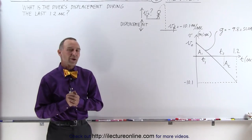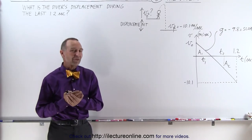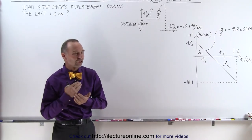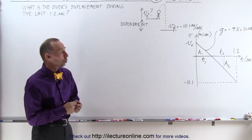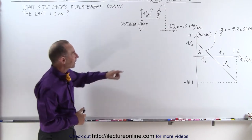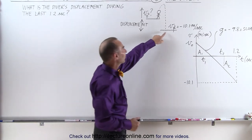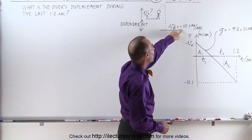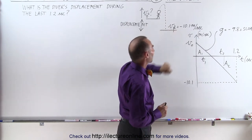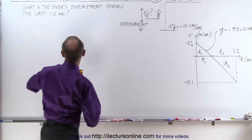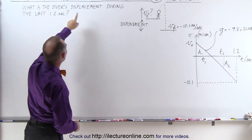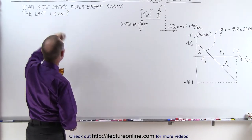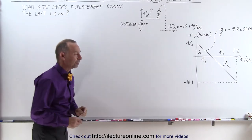Welcome to Electron Line. Our next example is a rather challenging example. It's about a diver that dives into a pool, and by the time the diver hits the pool the diver is moving at minus 10.1 meters per second. The question is: what is the diver's displacement during the last 1.2 seconds?